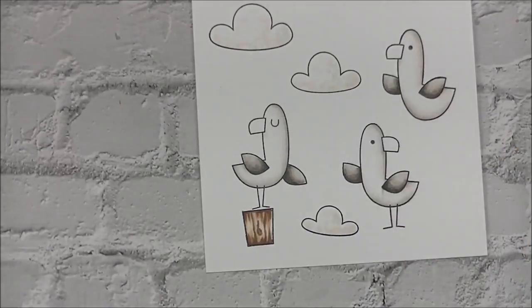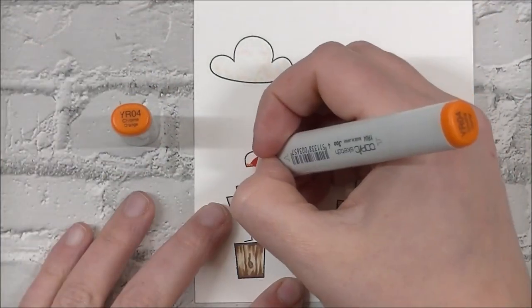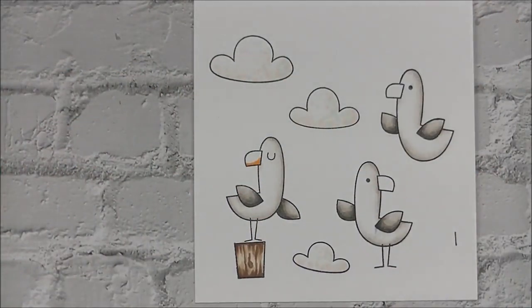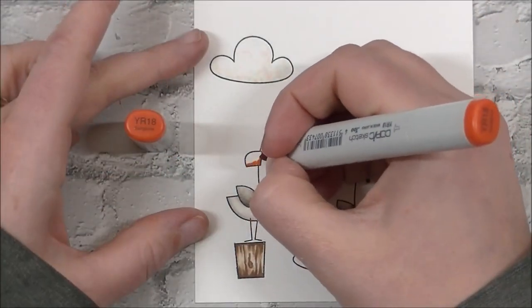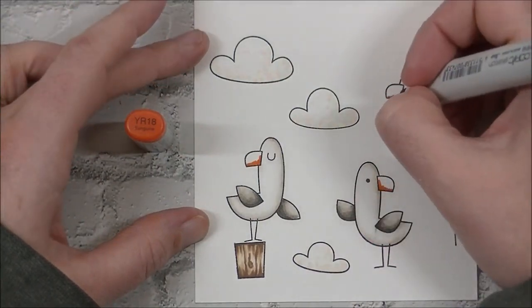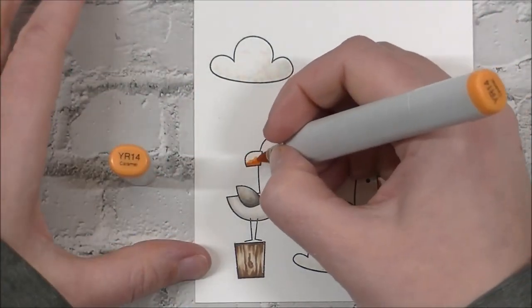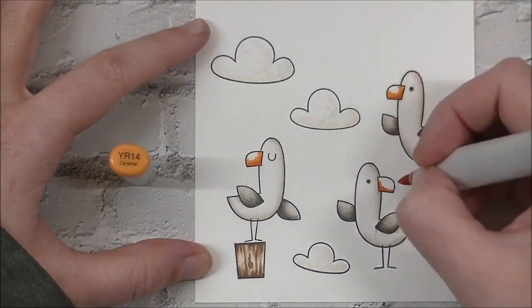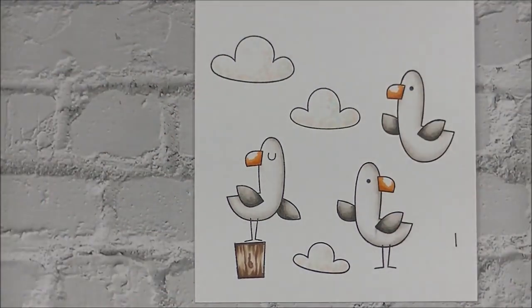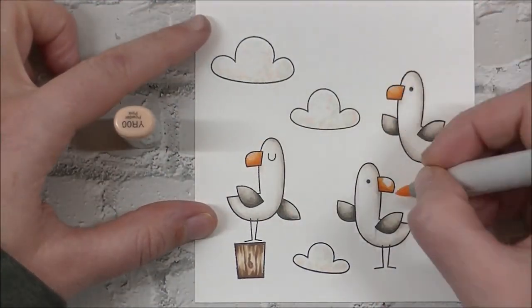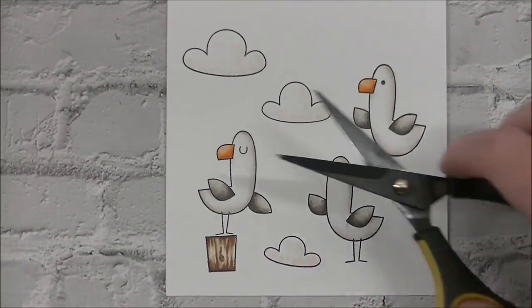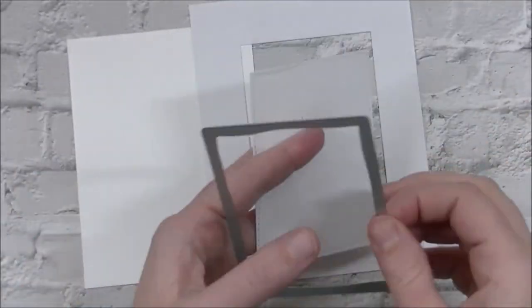So then we're going to cut all of our images out. But before that, Jessie remembered she didn't color in the beaks. I don't edit out all the stuff that I forget because I think it's funny that I get that far ahead of myself. So I'm going in with some orange colors just to give them a nice bright beak.